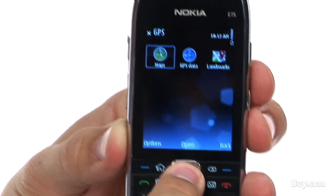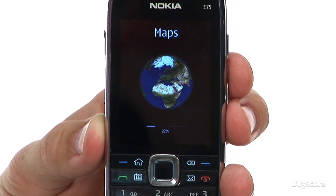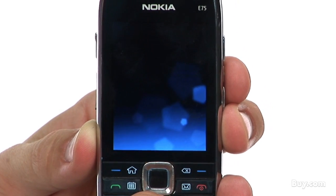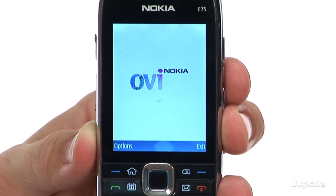Nathan, is there anything else that we need to know about the E75? The E75 will come with three months free of voice-guided turn-by-turn navigation and 12 months of files on Ovi subscription.